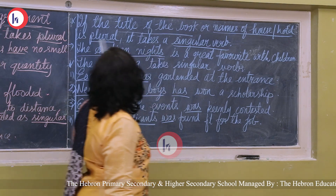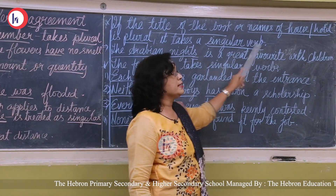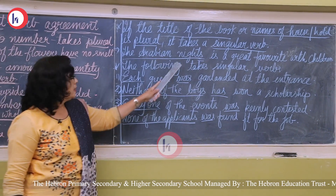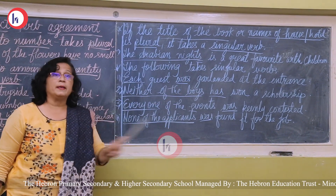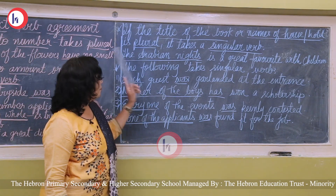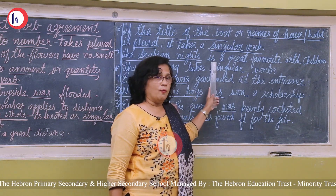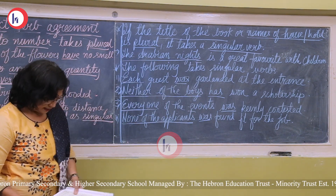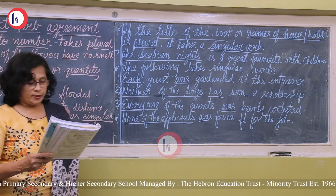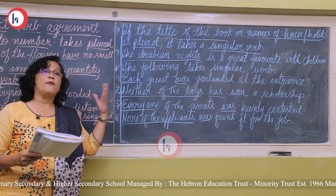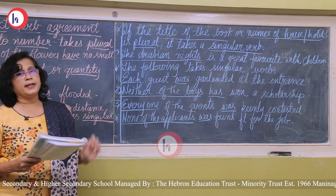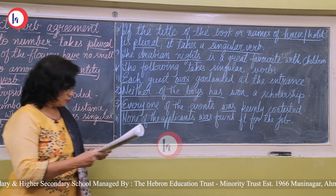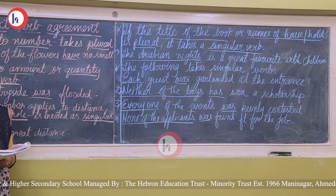If the title of a book or the name of a hotel is plural, it still takes a singular verb. For example, 'The Arabian Nights is...' — though 'nights' is plural, it is the name of a book, so we use singular 'is.' Similarly, 'The Seven Sisters is situated on high land' — 'Seven Sisters' is the name of a hotel, so it takes singular 'is.'